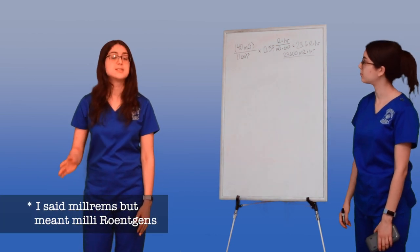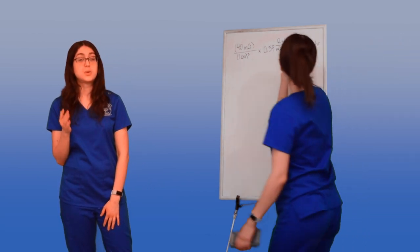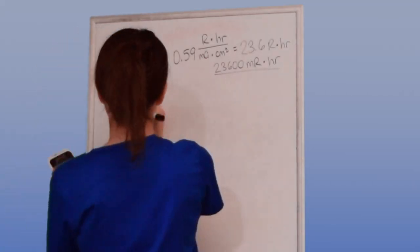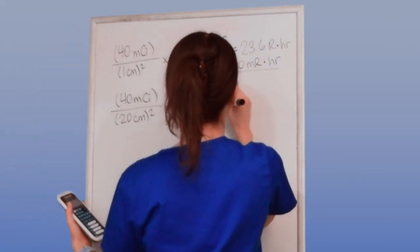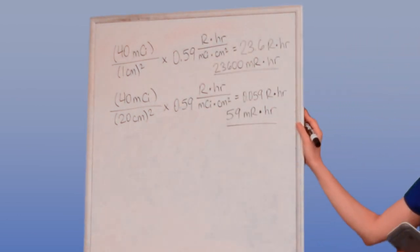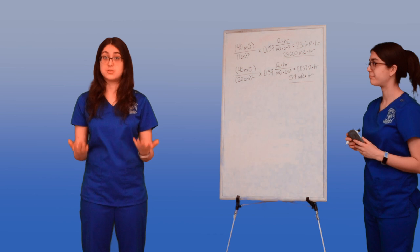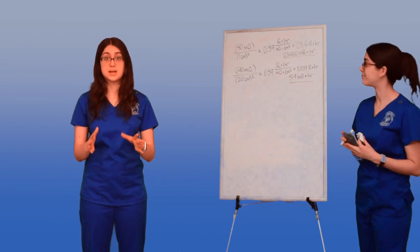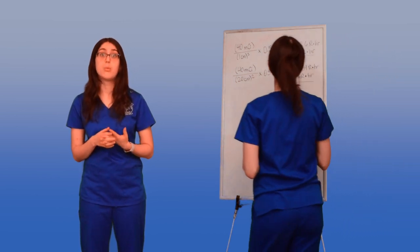I'm not going to grab it with my hands. Let's use my tongs. My tongs are 20 centimeters long. So I'm going to use the same formula, and my distance from the source is now going to be 20 centimeters. We get 0.059 roentgens per hour, or 59 millirentgens per hour. Drastically lower than before, so we see how that distance principle of ALARA works.